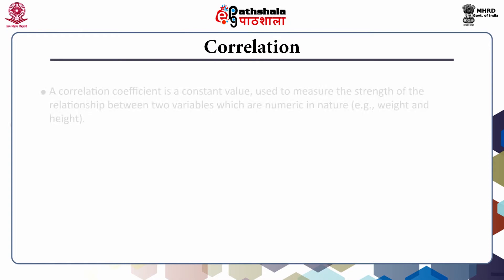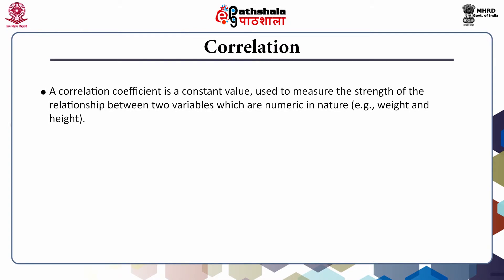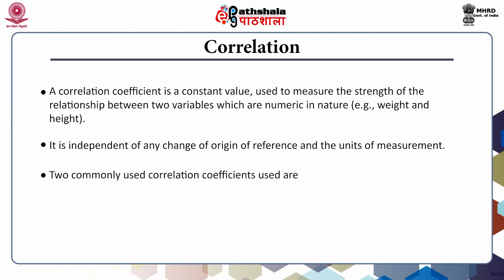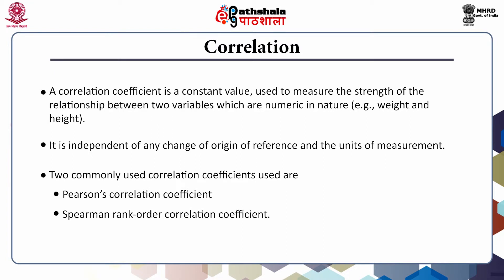A correlation coefficient is a constant value used to measure the strength of the relationship between two variables which are numeric in nature, for example weight and height. It is independent of any change of origin of reference and the units of measurement. Two commonly used correlation coefficients are Pearson's correlation coefficient and Spearman's rank order correlation coefficient.